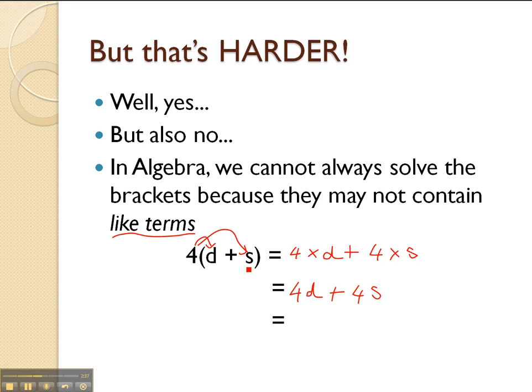We can't add D plus S so we use the distributive law. We times the number outside the brackets by each of the pronumerals inside the brackets to give us this answer here, 4D plus 4S.